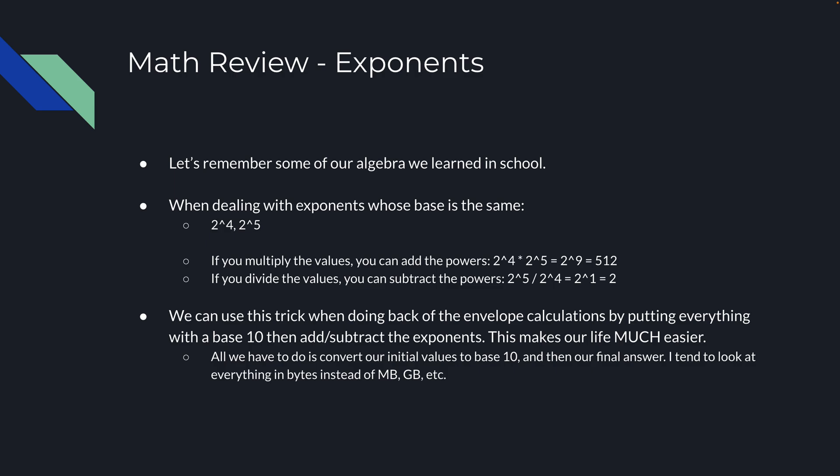All you have to do is convert your initial values to base 10, compute the result, and then convert back to whatever unit seems most reasonable. You don't want to say '700 billion bytes per day' — bring that to gigabytes or terabytes. I find it much easier to do everything in bytes and convert back at the very end rather than trying to divide megabytes by gigabytes directly.